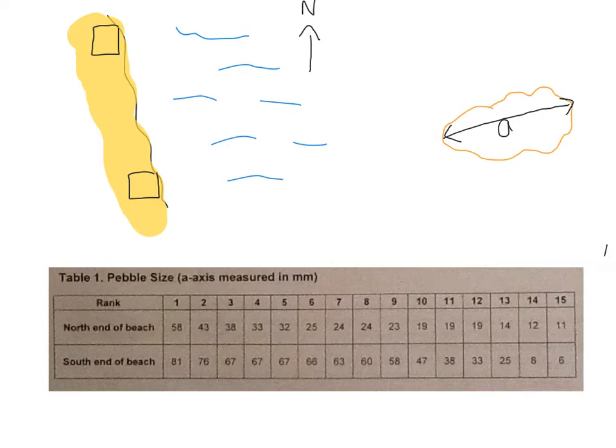They go to the north end of the beach and collect 15 pebbles, and they go to the south end of the beach and also collect 15 pebbles, and they measure the a-axis of each one. They put their data into a table, north end and south end of the beach, and they want to see how dispersed that data is. So they would use standard deviation.